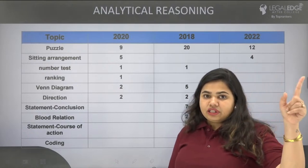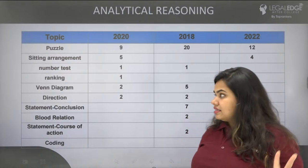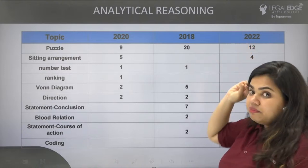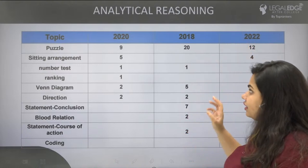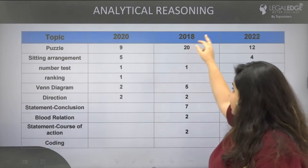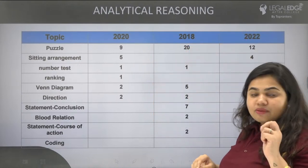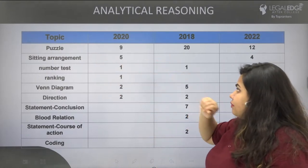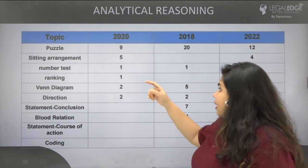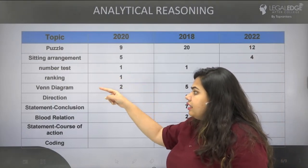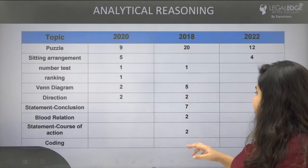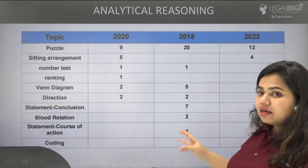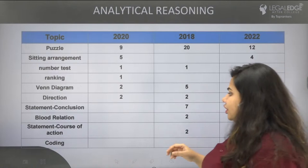There are two parts of reasoning: critical reasoning and analytical reasoning. In analytical reasoning, puzzles are very important — there were 20 puzzles in 2018, 9 in 2020, and 12 in 2022. For seating arrangement, there was a question in both 2020 and 2022. Topics like number test, ranking, Venn diagram, direction, statement-conclusion, blood relation, and course of action appear less frequently. Coding had two questions in 2018.